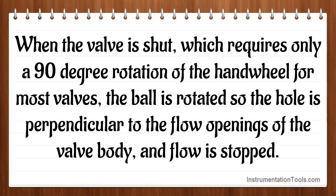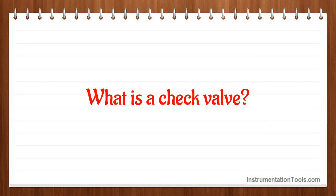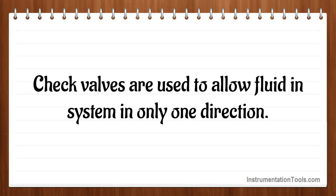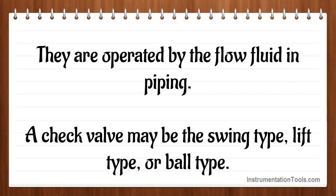When the valve is shut, which requires only a 90-degree rotation of the handwheel for most valves, the ball is rotated so the hole is perpendicular to the flow openings of the valve body and flow is stopped. What is a check valve? Check valves are used to allow fluid in a system in only one direction. They are operated by the flow of fluid in piping. A check valve may be the swing type, lift type, or ball type.